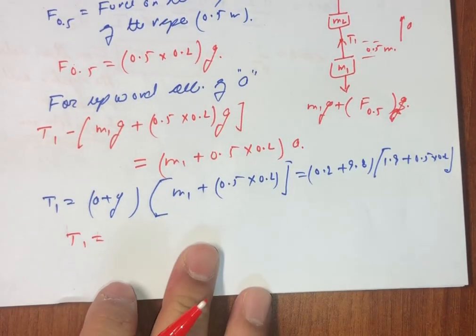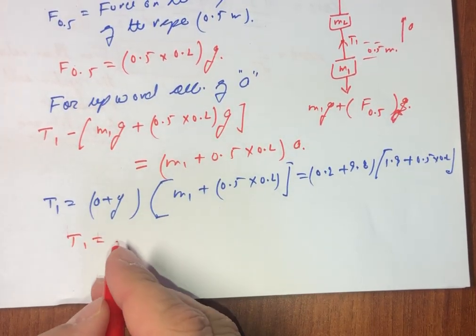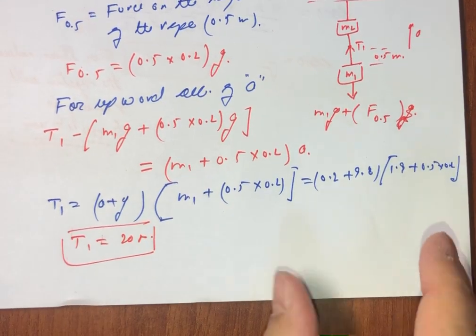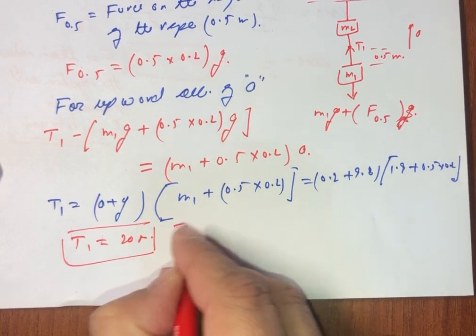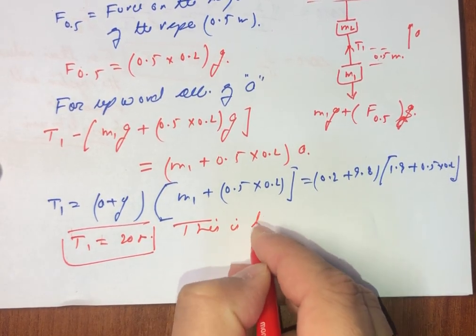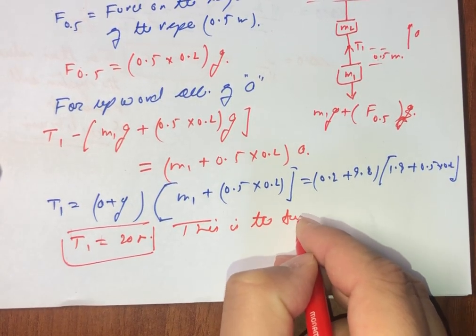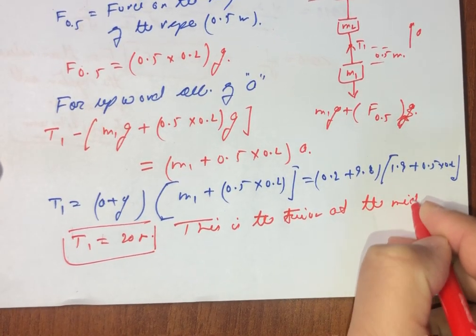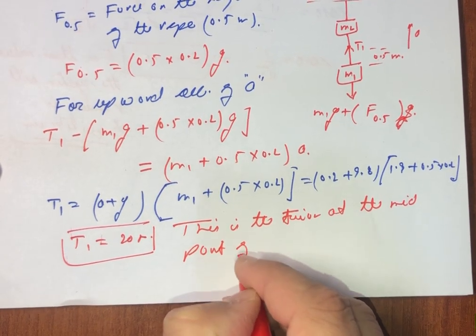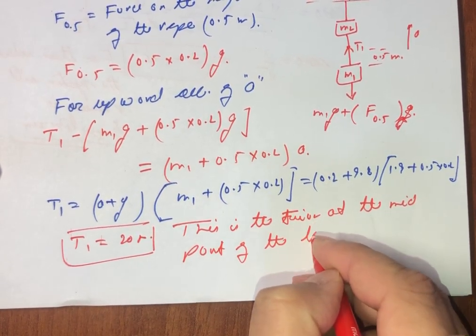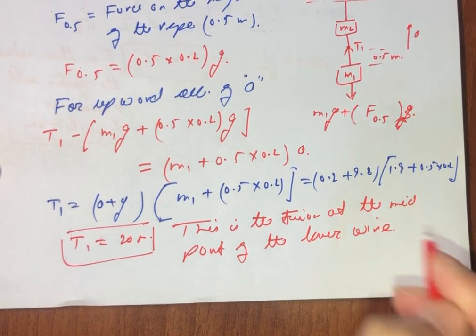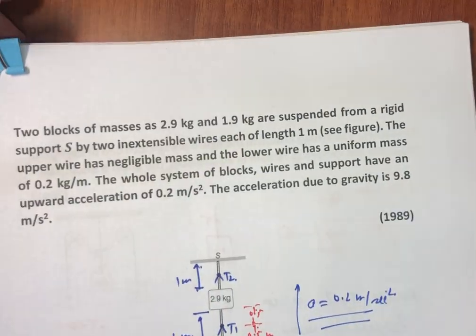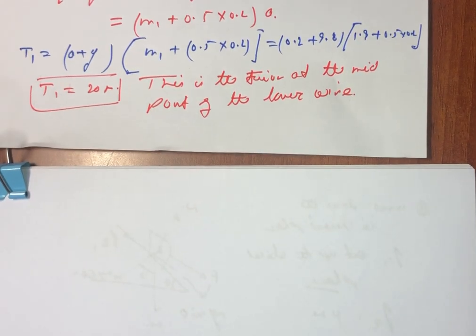Solving this, we get tension T1 = 20 Newton. This is the tension at the midpoint of the lower wire.